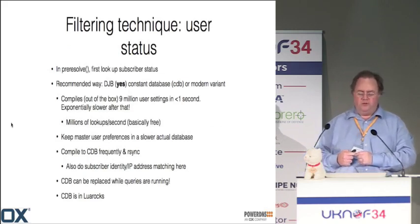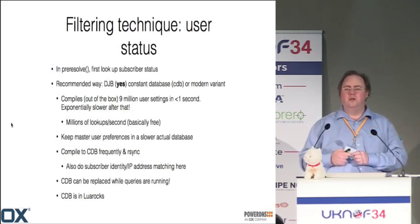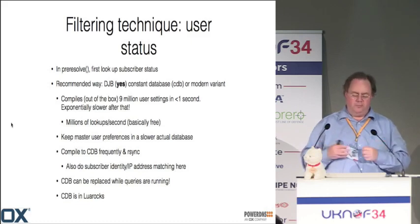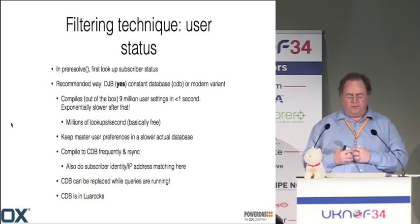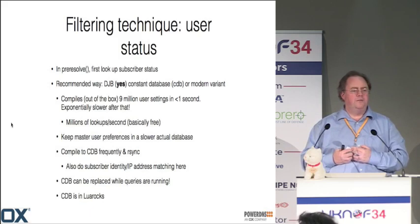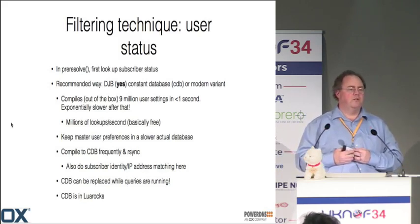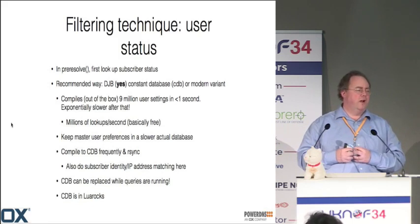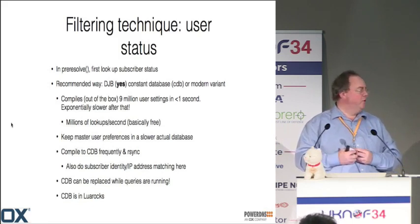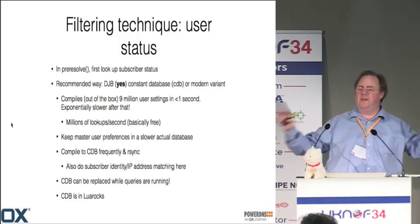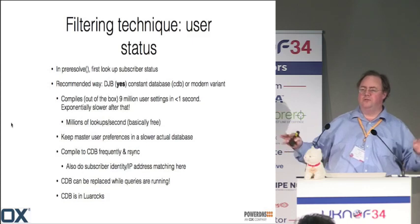In pre-resolve, you must look up the subscriber status: does this user want any filtering at all? We looked at the best way to do that at high speed and found the constant database (CDB) from Dan Bernstein. It's still fast — you can compile 9 million user settings in under one second, getting a compiled database with all statuses for 9 million users ready. After 9.5 million users it takes 10 seconds, but as long as you have less than 9 million users you should be fine.